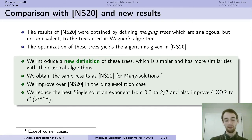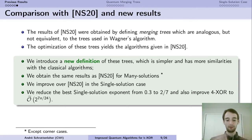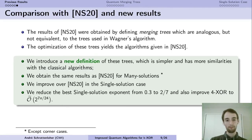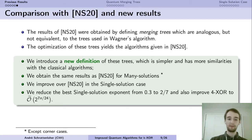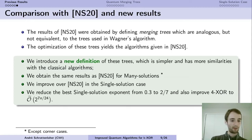This paper started with the goal of having a simpler definition of these algorithms — in particular, a simpler definition that enables keeping the binary tree representation used in the classical setting. We obtain the same results in the many-solution case, but in the single solution case I could improve the results by modifying some constraints. This reduced the best exponent from 0.3 to 2/7, and it also improves the 4-XOR algorithm to the best known time complexity today: 2^(7n/24).